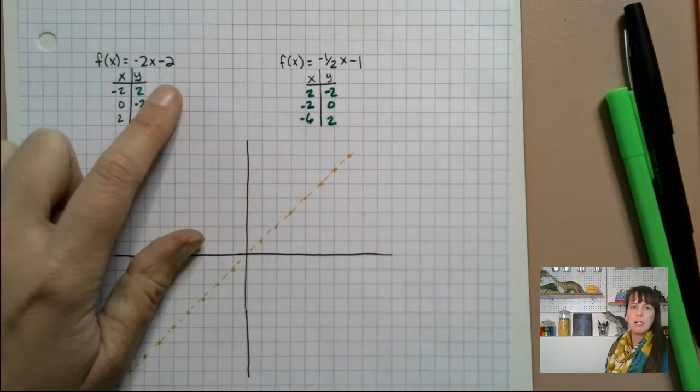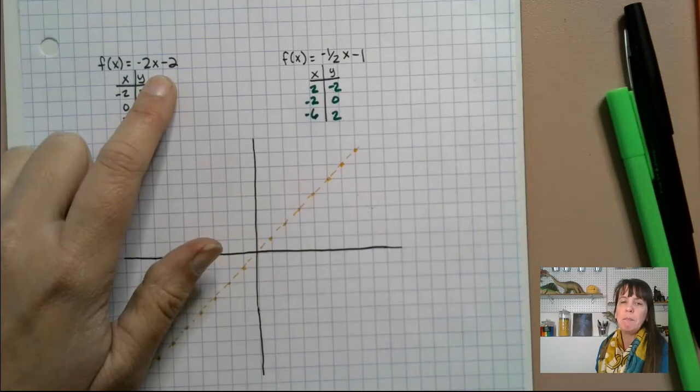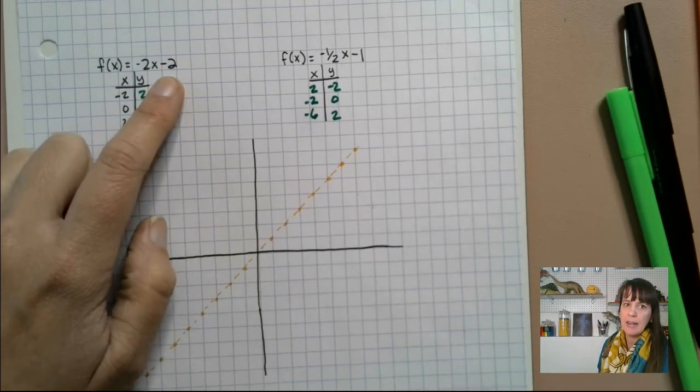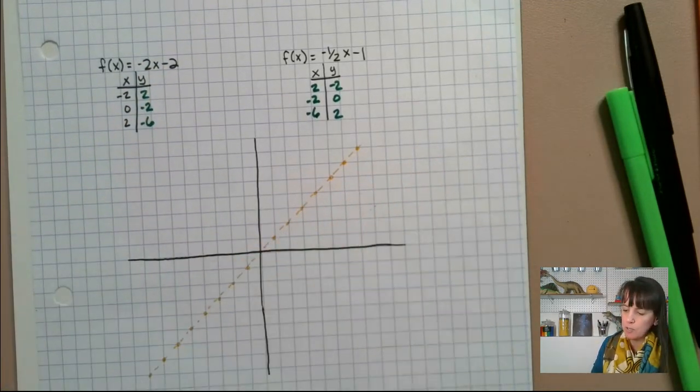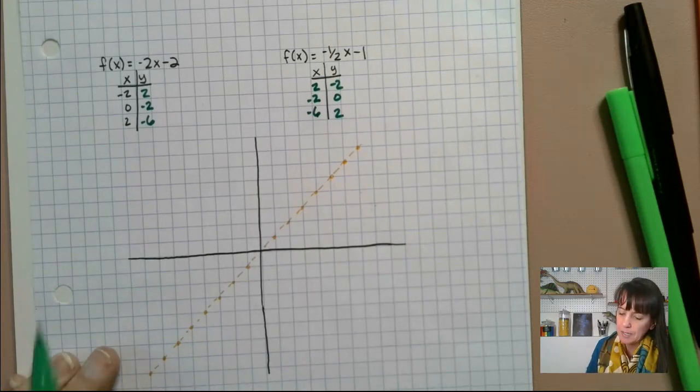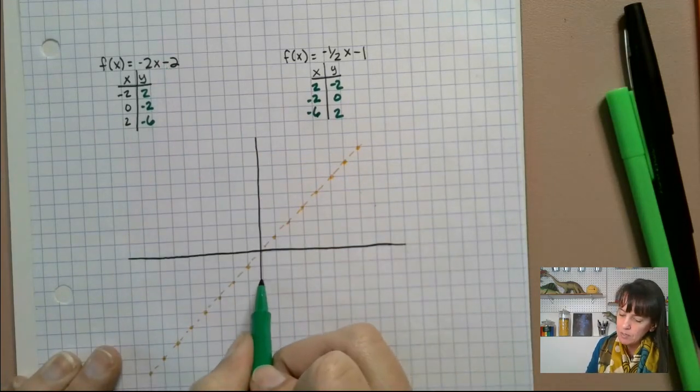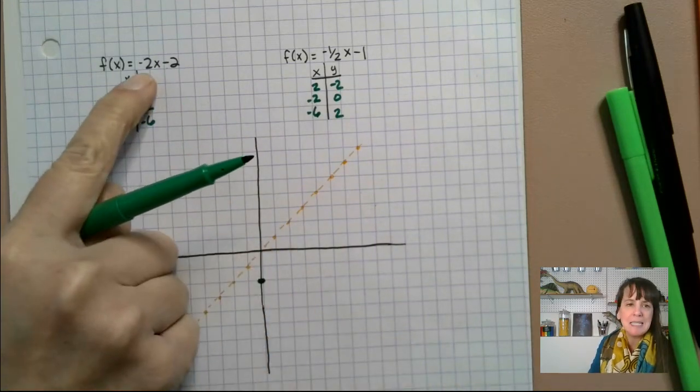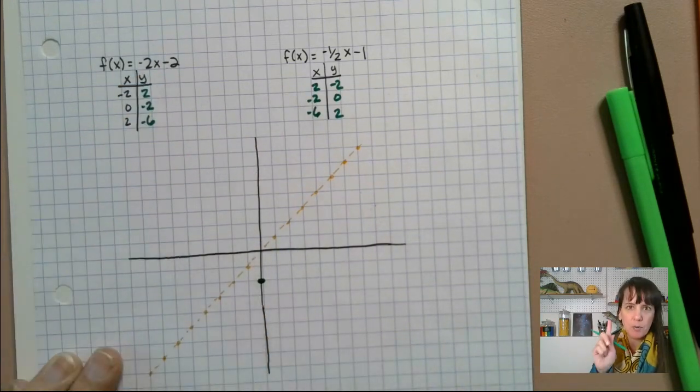So the first one that I'm going to graph is negative two x minus two. That means I'm going to start at negative two. And for right now, I want you to disregard that orange line that's right there in the middle. I'm going to use that to show something at the end. So negative two, start at negative two. My slope is negative two. And remember, slope is always a ratio, aka a fraction.